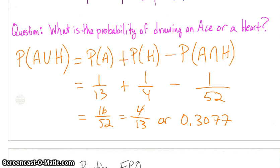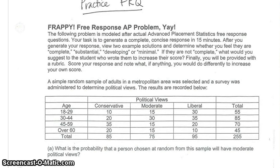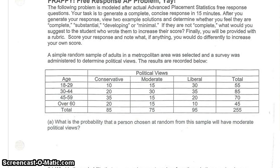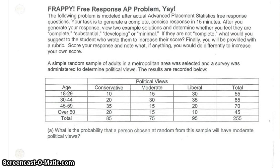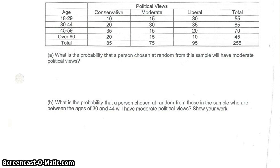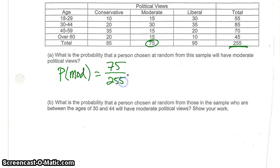Now let's look at a practice FRQ. Question one: what is the probability that a person chosen at random from this sample will have moderate political views? This is marginal, so I want the total for moderate out of my total of 255. The probability of moderate equals 75 out of 255, which reduces to 5/17, or 0.2941.